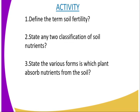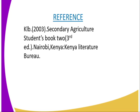That is the end of today's lesson. I'm going to leave you with several questions to verify whether you have followed and understood. The first question is: define the term soil fertility. The second question is: state any two classifications of soil nutrients. And the third question is: state the various forms in which plants absorb nutrients from the soil. For reference, you can refer to our secondary agriculture student book two.